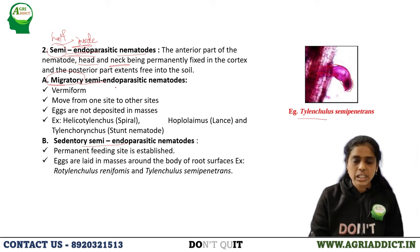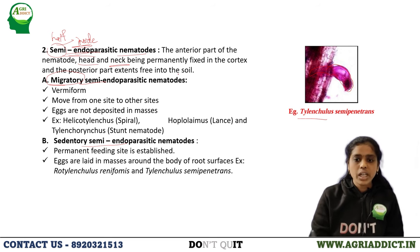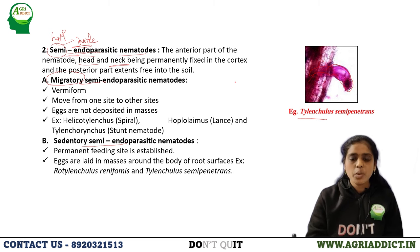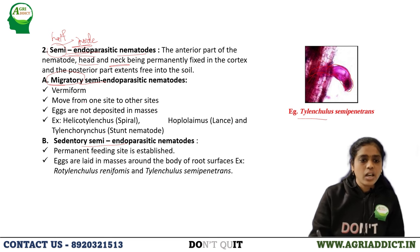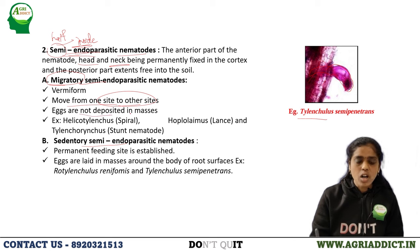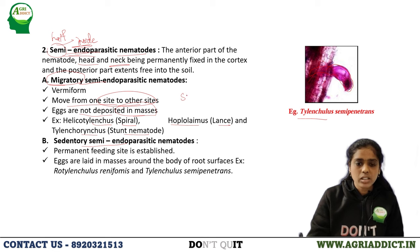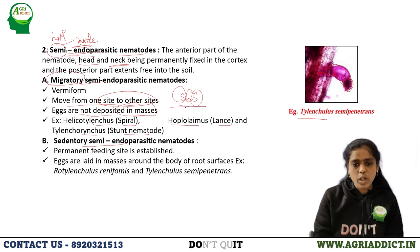Migratory semi-endoparasitic nematodes move from one place to another and cause infection. After the juveniles complete feeding on root tissue cell contents, they detach and move to other host plants for new infection. Eggs are not deposited in masses. Examples are spiral nematode (Helicotylenchus), lance nematode (Hoplolaimus), and stunt nematode (Tylenchorhynchus) — easily remembered as SLS: spiral, lance, and stunt.